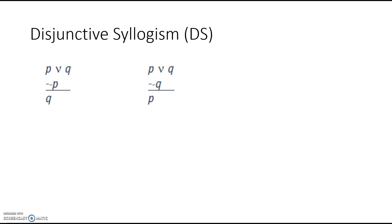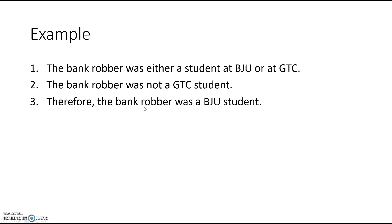The next rule is disjunctive syllogism: Either P or Q; not P; therefore Q. Or you could say P or Q; not Q; therefore P — it works either way. For example: the bank robber was either a student at Bob Jones or at Greenville Tech. But the bank robber was not a student at Greenville Tech. Therefore, the bank robber was a Bob Jones student. It's like process of elimination — a valid argument form.